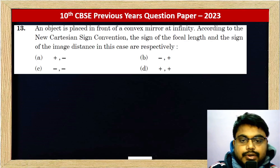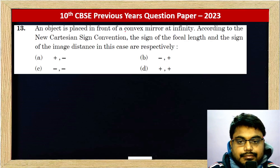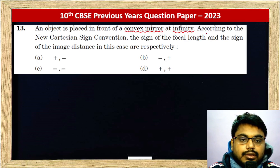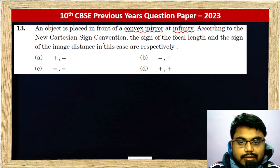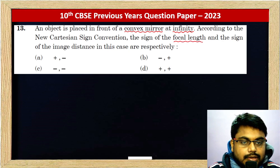An object is placed in front of a convex mirror. It is a convex mirror and it is at infinity according to the new Cartesian sign convention. The sign of the focal length and the sign of the image distance in this case respectively.